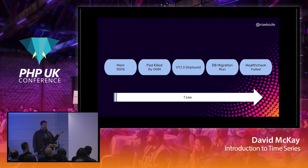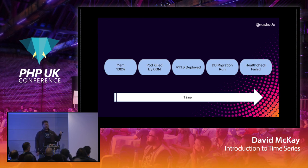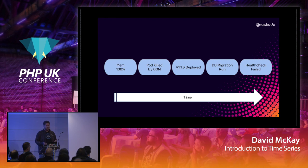What we see is: the memory hit 100%, the process was killed by the OOM killer, we triggered a new deployment — if you're using the latest tag you're always pulling, so you don't know what's running in production. That caused the database migration to run, which broke all our tables because we weren't supposed to release it yet. The health check is now failing and the application is in a crash loop backoff. Understanding what happened, when it happened, and the order it happened is how we make sense of complex situations.